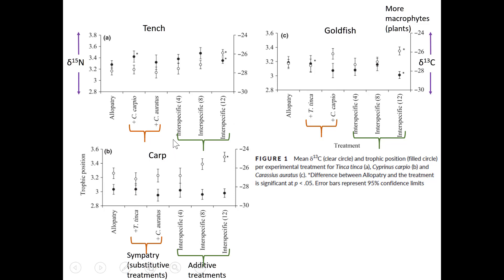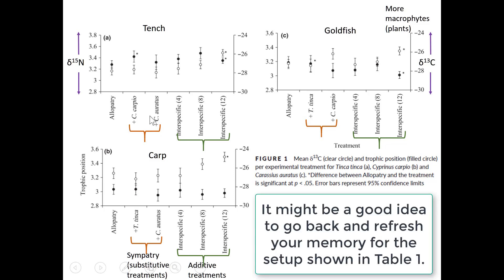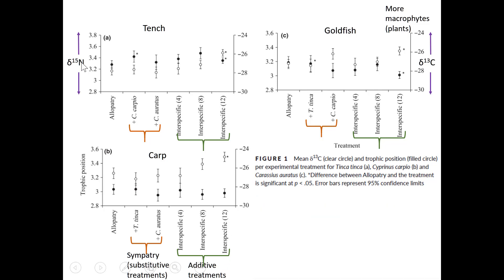To remind you of the study design: the orange brace covers the two sympatric substitutive treatments, and the green brace covers the additive competitive treatments. There are also two y-axes — the primary y-axis is the isotopic ratio for nitrogen-15, and the secondary y-axis is the isotopic ratio for carbon-13. Carbon-13 is shown in open circles, and nitrogen-15 is shown in closed circles.